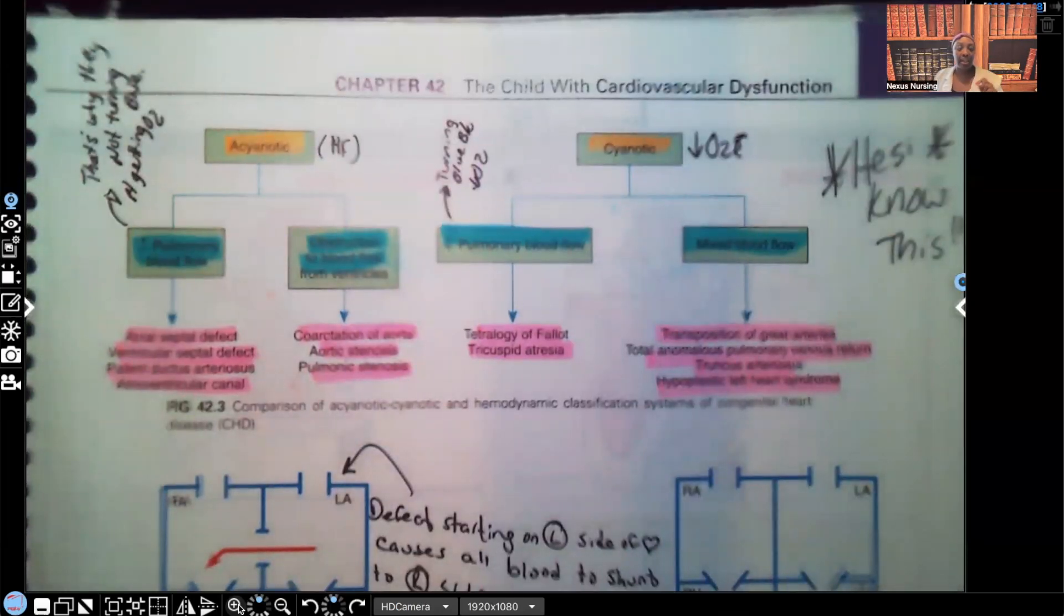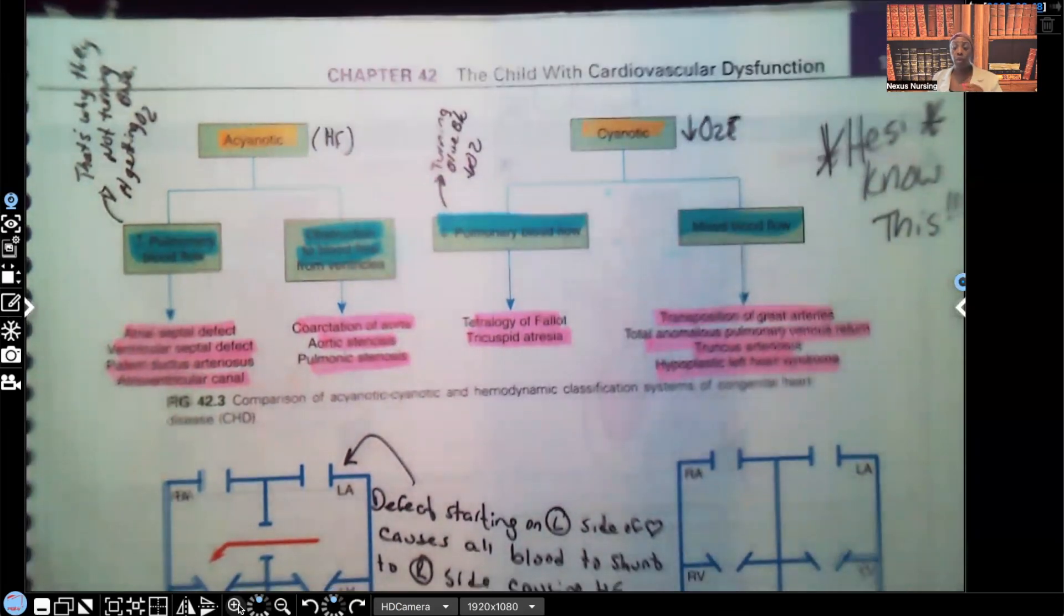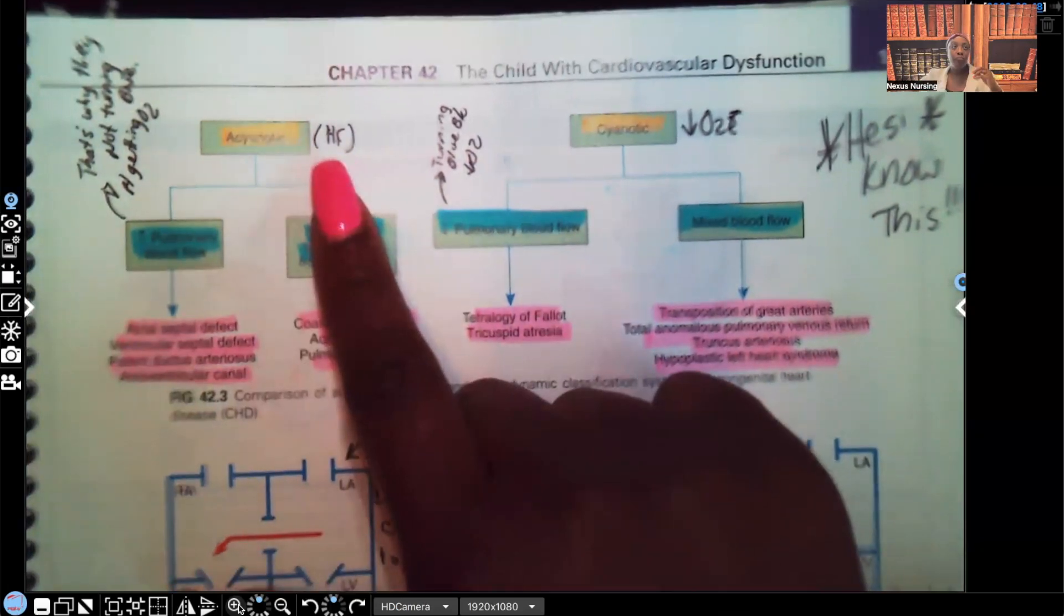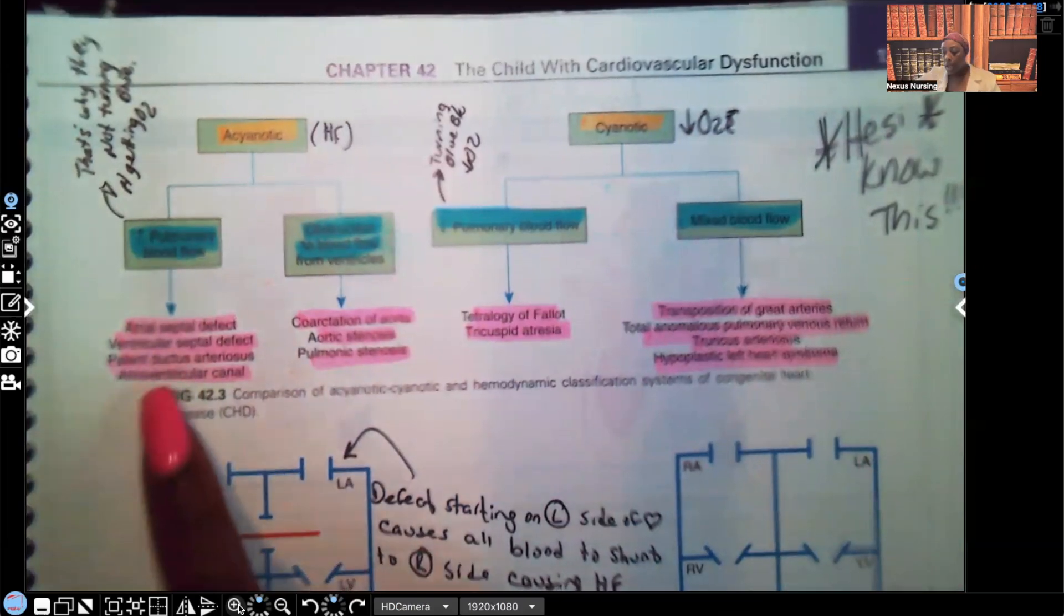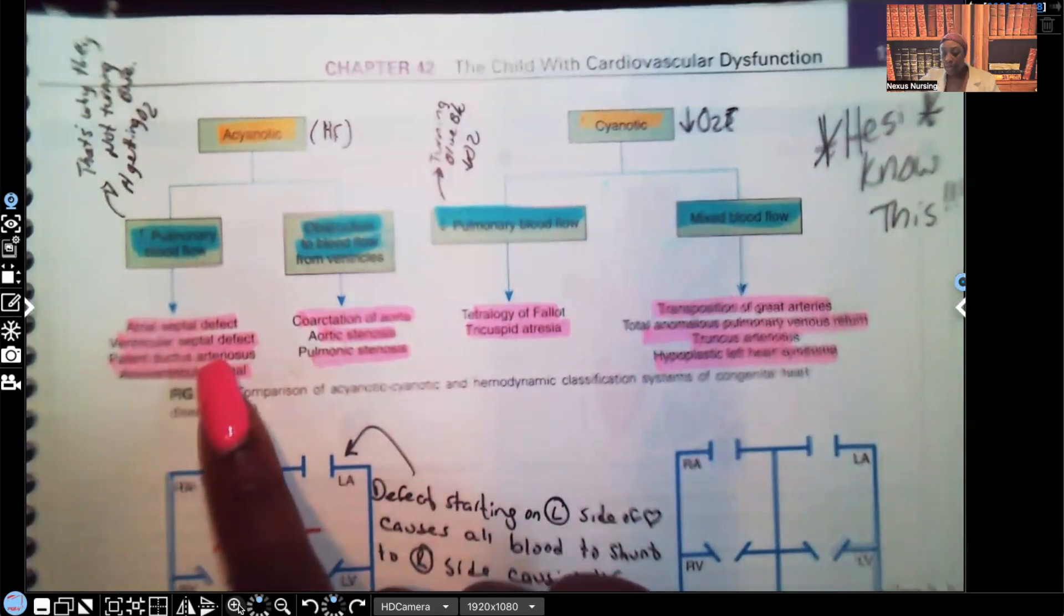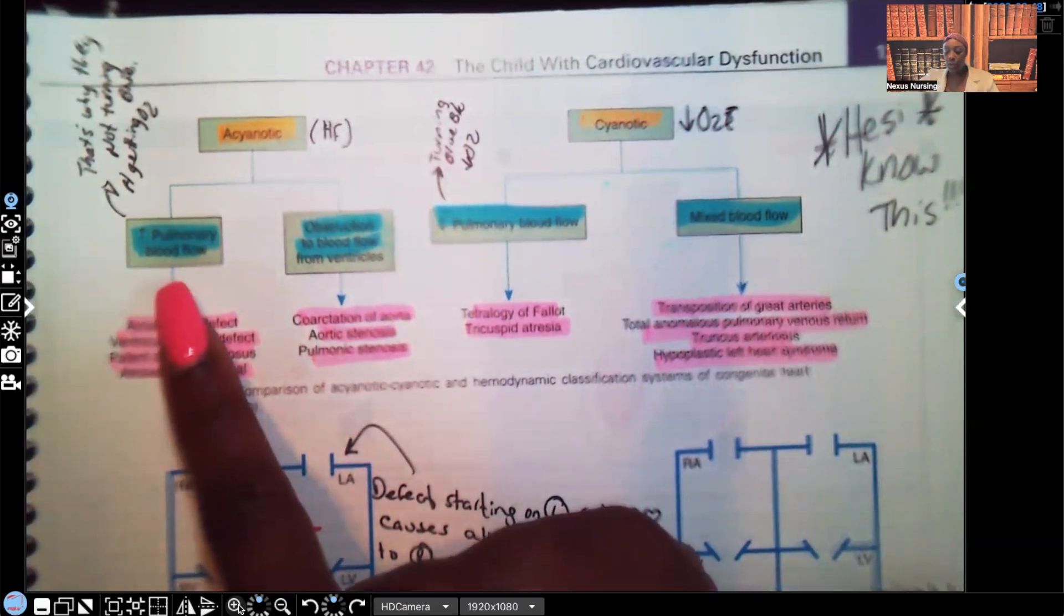Let's start with acyanotic. So this patient's not turning blue. Remember, cyanosis is when that patient's turning blue because of lack of oxygen. When you put that A in front of cyanosis, acyanosis, that means to be without, without that patient turning blue because of lack of oxygen. The signs and symptoms that we see in the disorders under acyanotic, this patient is not turning blue.